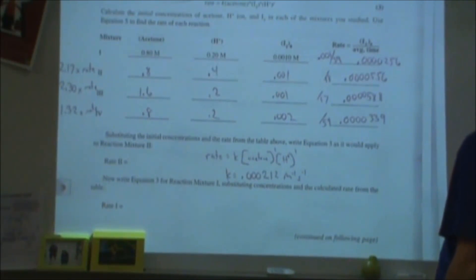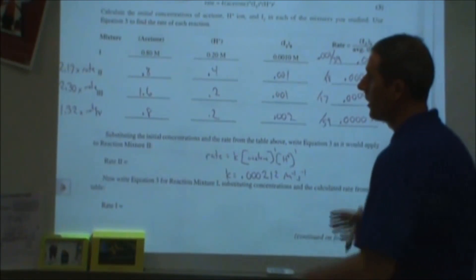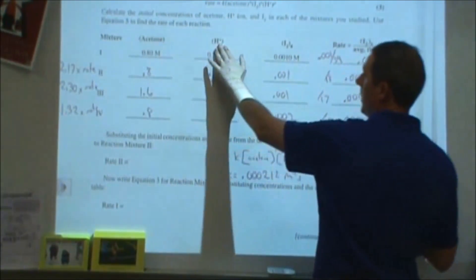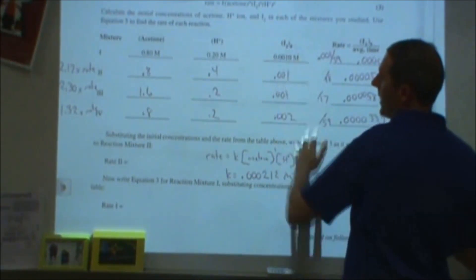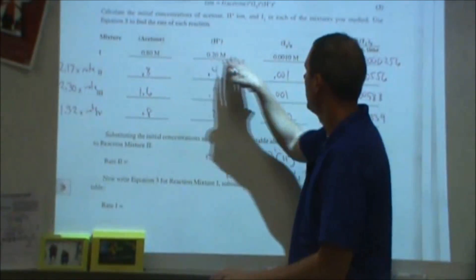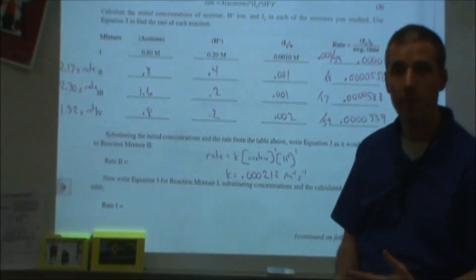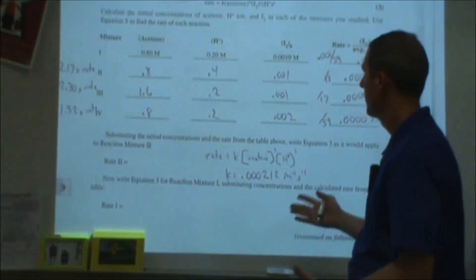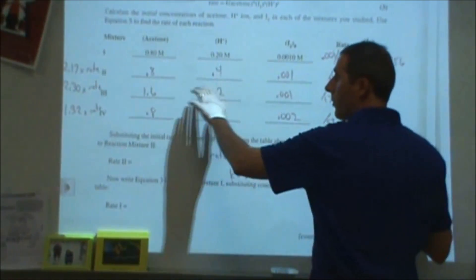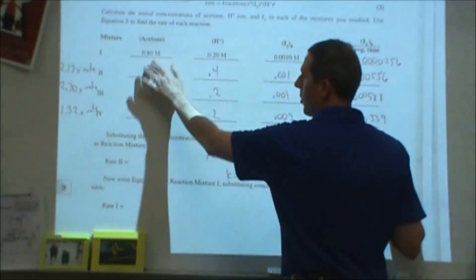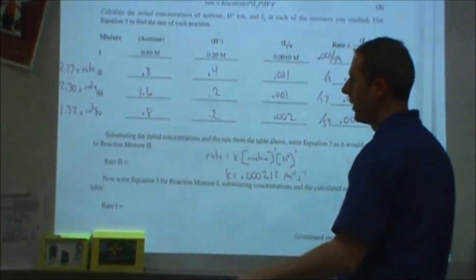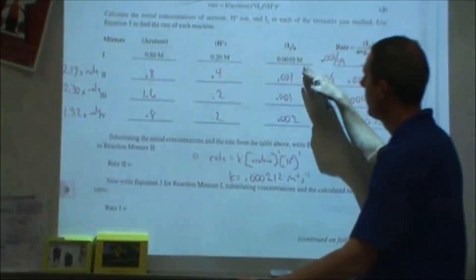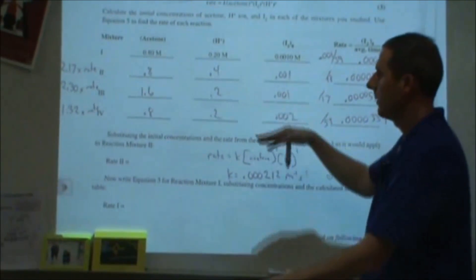Now we're going to go back and look at our data. What we've done is run four different experiments where we've altered the concentrations of acetone, H⁺ from the acid, and iodine. Each initial concentration was divided by five because we took 10 milliliters of each into a 50 milliliter total volume solution. In each experiment, we held two concentrations constant while doubling one: the acid, the acetone, or the iodine.